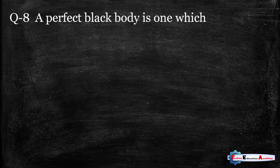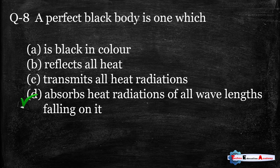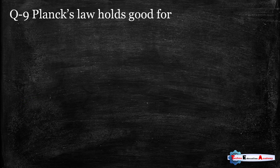Question number eight: a perfect black body is one which — option A: is black in color, option B: reflects all heat, option C: transmits all heat radiation, option D: absorbs heat radiation of all wavelengths falling on it. A perfect black body absorbs heat radiation of all wavelengths falling on it, so option D is correct. Question number nine: Planck's law holds good for black bodies, so the right answer is option A.